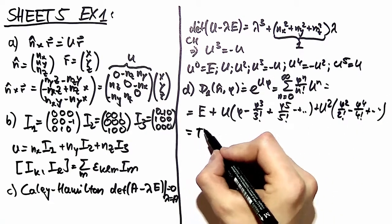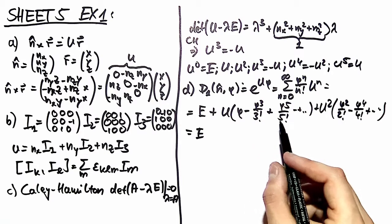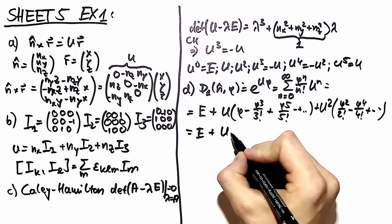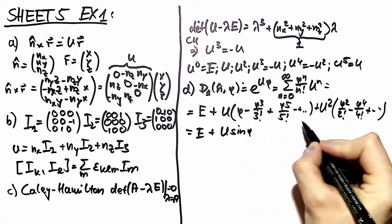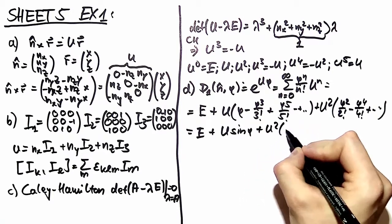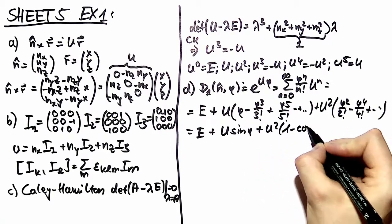So what is this? Well, you recognize here a sine and here a cosine. So this is u times sine phi and here you have u squared of one minus cosine phi.